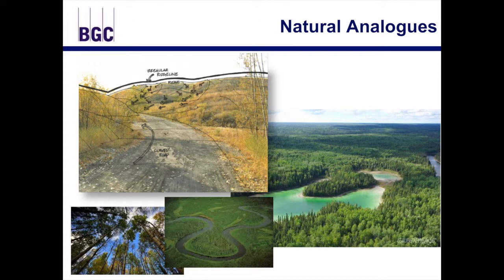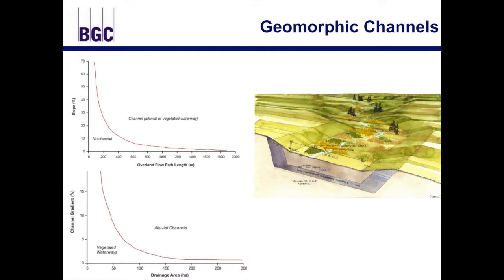In the absence of many analogues on the reclaimed landscape, we tend to use a lot of information from natural analogues. We assume that if we replicate some of the form of natural analogues, we'll be able to inherit some of those processes and functions. One type of natural analogue we use — and this is work that Goulder's been doing over the last few decades — is looking at a geomorphic approach for our channel designs, going out to reference sites and using that information to guide the landform design approach for designing and constructing channels.